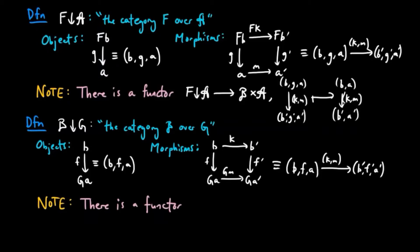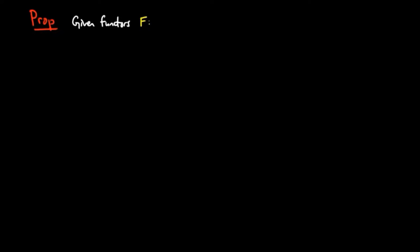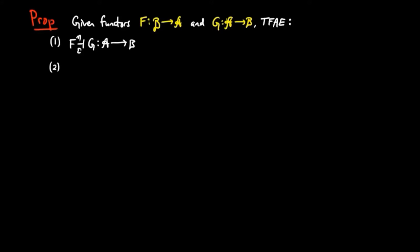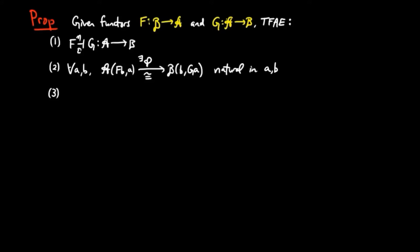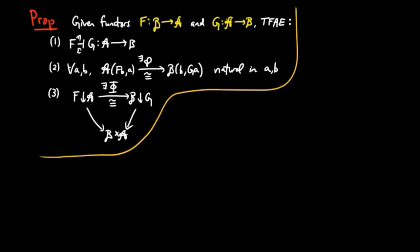There is a completely similar definition for the category B over G; we will skip its presentation, but you may pause the video if you want to see the details. We now come to the main result of this section. Given functors F from category B to A and G from category A to B, the following are equivalent: (1) F and G are in an adjoint situation where F is left adjoint to G via eta and epsilon; (2) for all objects A and B, there exists an isomorphism of hom-sets from the hom-set of morphisms in A to the hom-set in B, and this is natural in A and B; (3) there exists an isomorphism of functors from F over A to B over G, which respects the forgetful functors to the product of B and A, meaning that the diagram here commutes.